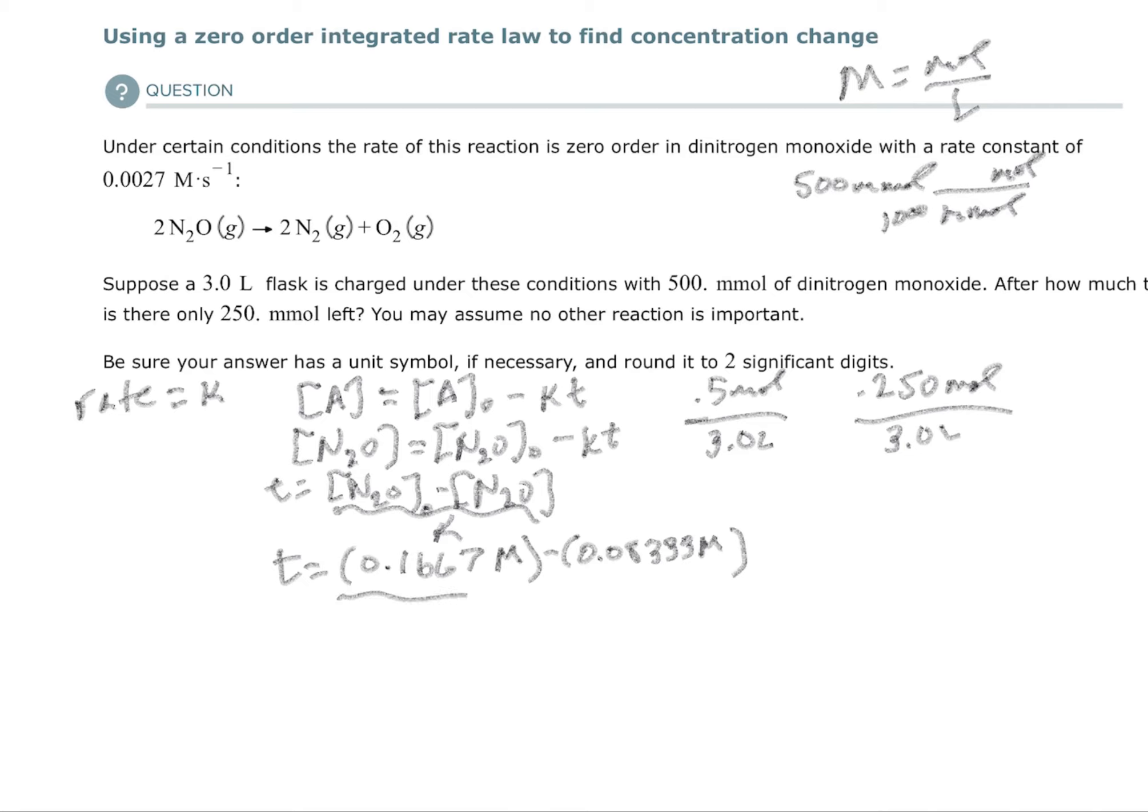Divided by K. So what's my K? It tells me at the top that it is 0.0027. I'm going to get molars on the top divided by molars, divide again, and I'll end up with seconds as my answer.